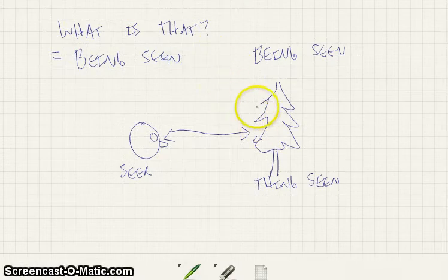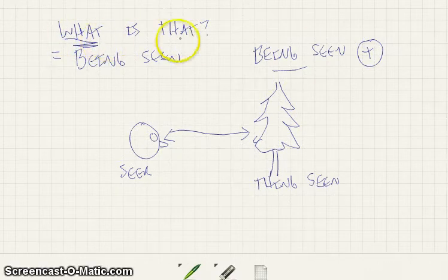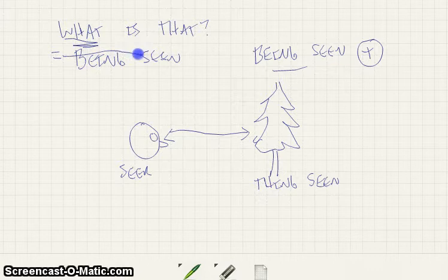Well, I mean, yeah, it is being seen. That is true, right? So it's true about it. But it doesn't tell us anything about the what. Because if you ask what is that, the answer is not a thing being seen. The answer is tree.